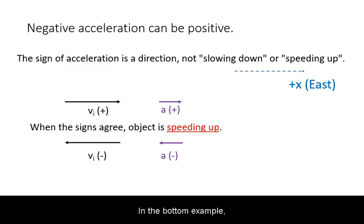In the bottom example, the sign of the acceleration is negative. However, this does not mean that that acceleration is less than in the example above. It is still the same magnitude. The negative sign also does not automatically mean that an object is slowing down.